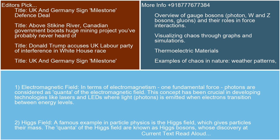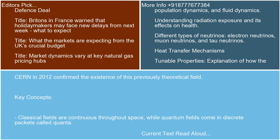Second, the Higgs Field. A famous example in particle physics is the Higgs field, which gives particles their mass. The quanta of the Higgs field are known as Higgs bosons, whose discovery at CERN in 2012 confirmed the existence of this previously theoretical field.